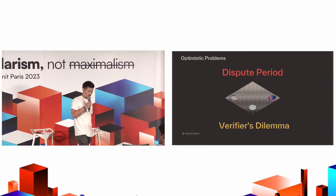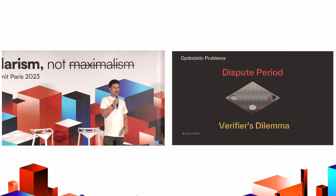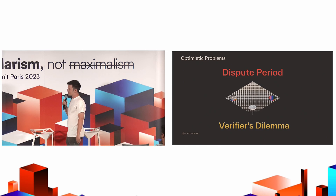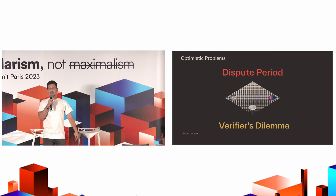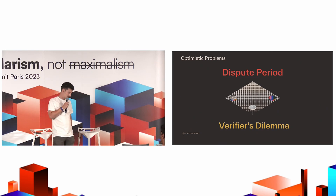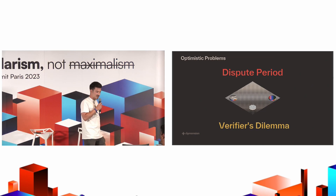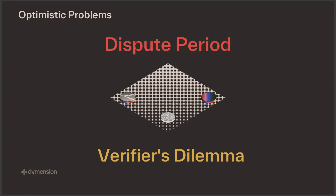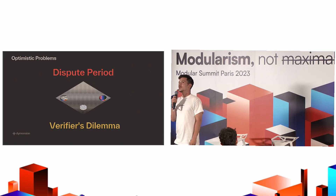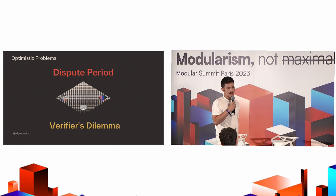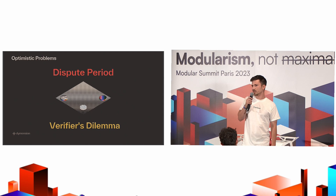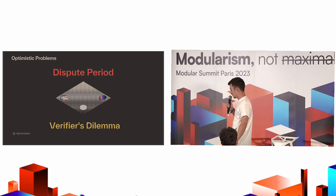Optimistic rollups are the most popular scaling solution — Arbitrum, Optimism, and others are very popular in terms of TVL. But they have issues, one of them being the dispute period. The dispute period prevents us from trusting the rollup immediately; we need to allow other participants to submit a fraud-proof. It's a one-honest-actor assumption that somebody is capable of submitting a fraud-proof to the settlement layer.